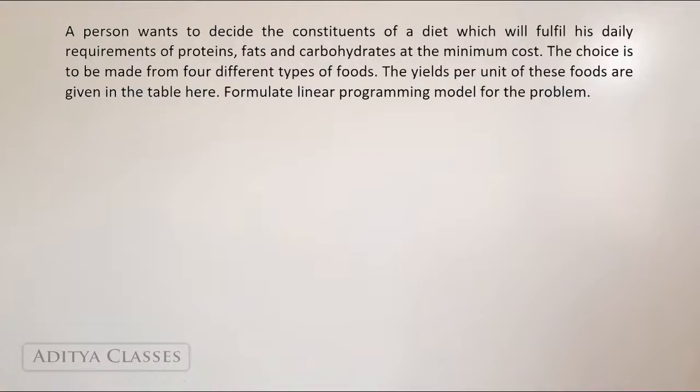The question says, a person wants to decide the constituents of a diet which will fulfill his daily requirements of proteins, fats and carbohydrates at minimum cost. Now, if you are reading the question very carefully, the objective, the target has already been given. He has to fulfill his daily requirements of proteins, fats and carbohydrates at minimum cost. So minimum cost becomes my objective, something that I am here to achieve.